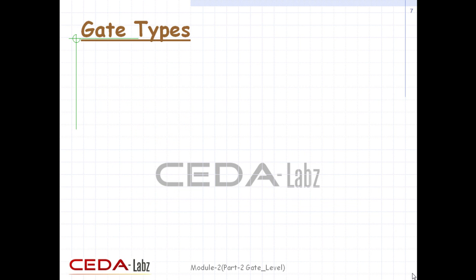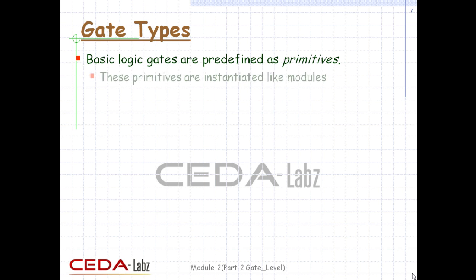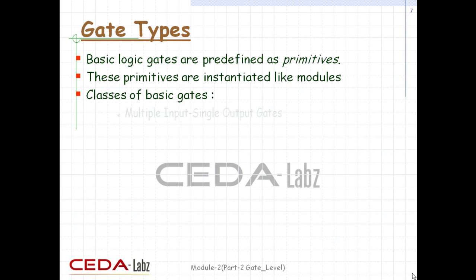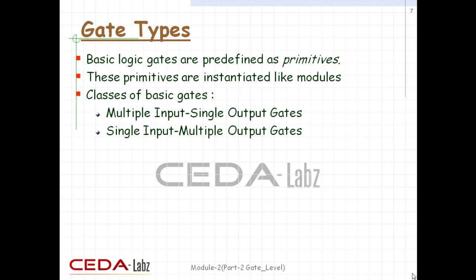A logic circuit can be designed by use of logic gates. Verilog supports basic logic gates as predefined primitives. These primitives are instantiated like modules, except that they are predefined in Verilog and do not need a module definition. All logic circuits can be designed using basic gates. There are two classes: multiple-input single-output gates, and single-input multiple-output gates.